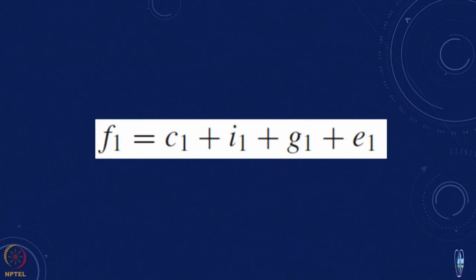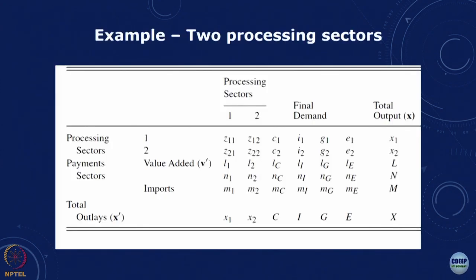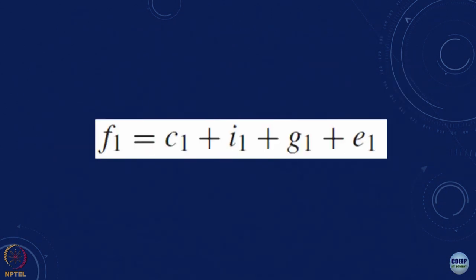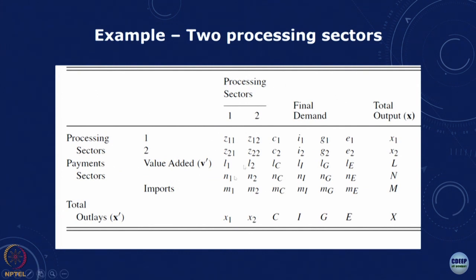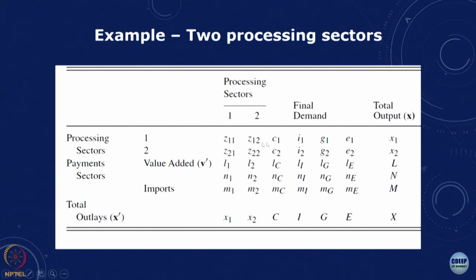Essentially what happens is we can take this and have the different buying and selling sectors. We also said the final demand is a combination of different sectors — the consumption, government consumption, exports — and there are payment sectors in the columns, which are the additional sectors where we pay wages, government services, and imports. This will add up to the total outlays; the rows will add up and so will the columns. So typically if we are talking of two processing sectors and some payment sectors, this is what we get — the final input-output table.